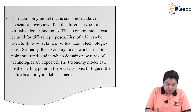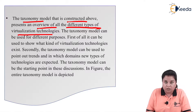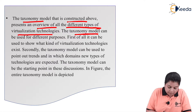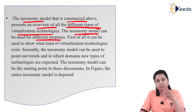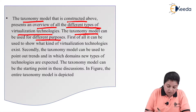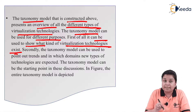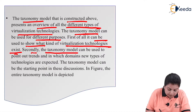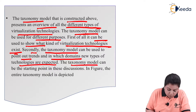The taxonomy model that is constructed presents an overview of all different types of virtualization technologies. The taxonomy model can be used for different purposes: first, it can be used to show what kind of virtualization technologies exist; second, the taxonomy model can be used to point out trends and identify in which domain new types of technologies are expected. The taxonomy model can be the starting point in these discussions.